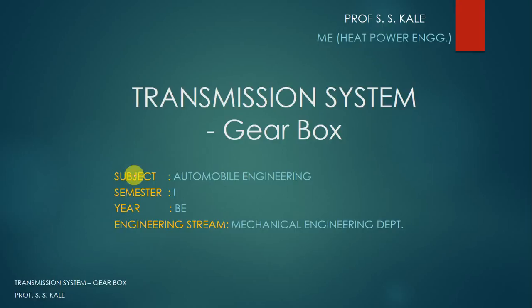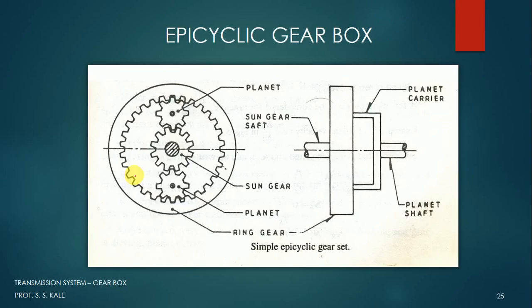Now we are going to see another gearbox which is very widely used, called the epicyclic gearbox. This epicyclic gearbox is most widely used in automatic transmission systems. In a semi-automatic transmission system the clutch pedal is not available, only the gear lever is. In an automatic transmission system there is only an accelerator and brake — no clutch pedal or gear lever — and this epicyclic gearbox is used for that.